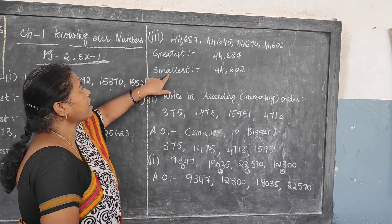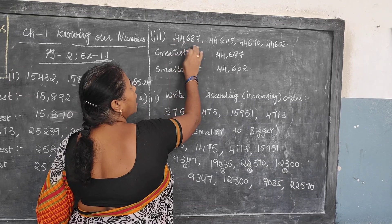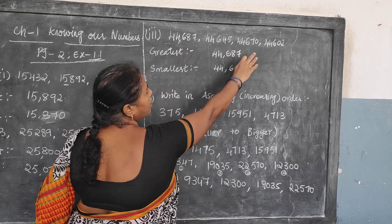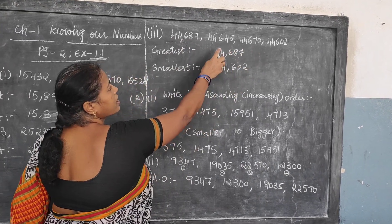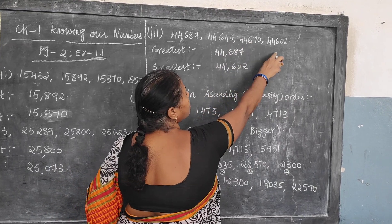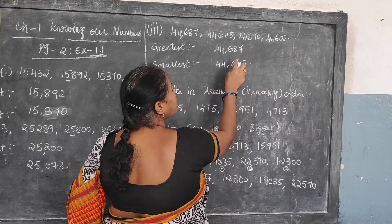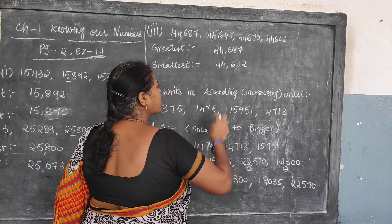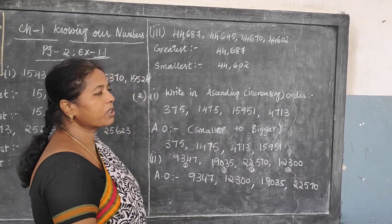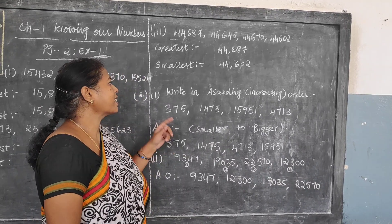Next, the smallest. Once you leave off the greatest number, the other three are what you check, children. Now: 645 is one number, 670 is one number, 602 is another number. So 602 is the smallest — meaning 44,602 is the smallest number.